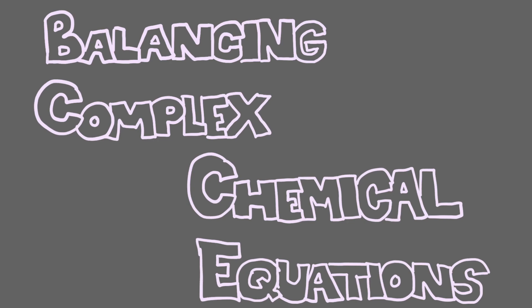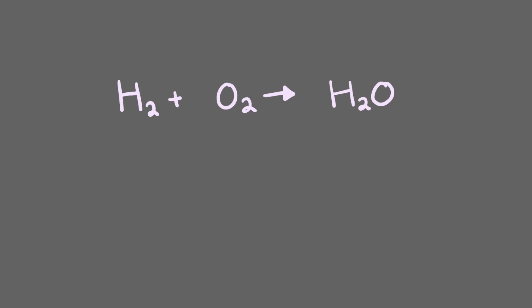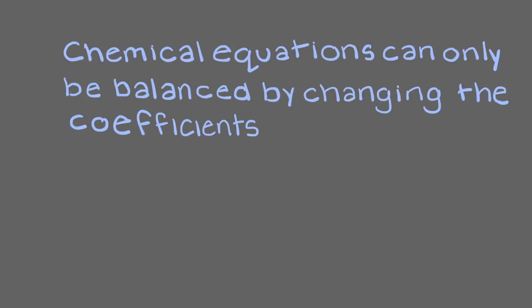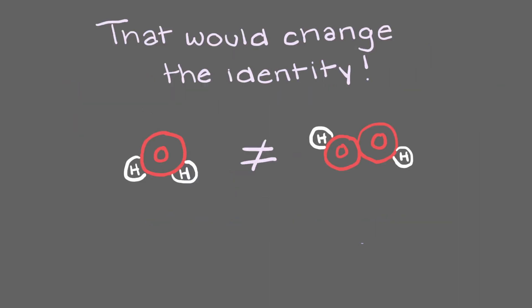Today we will be learning how to balance more complex chemical equations. As you saw in a previous video, chemical equations are balanced by a few simple steps. To review, what numbers cannot be changed in a chemical equation? That's right, chemical equations can only be balanced by changing the coefficients of the molecules, not subscripts within the molecules. That would change the identity of the molecule.